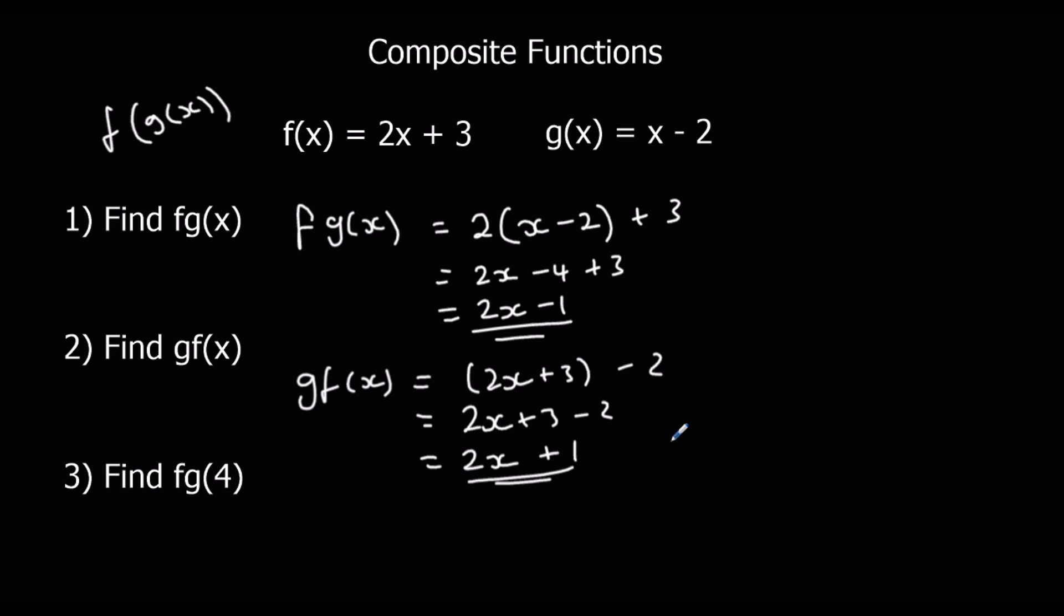And find f g of 4. That means we could either use this function here, or if we didn't have this already, we could put 4 into g, and then put that answer into f. It'd be easier to use the function we've got here, but just to show you how to do it, I'm going to put 4 into g first. So g 4 is 4 take away 2, which is 2.